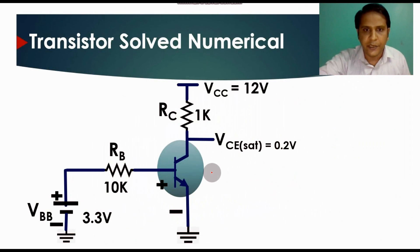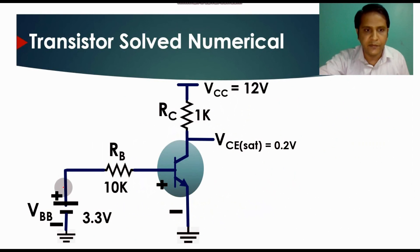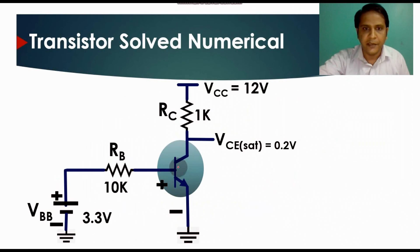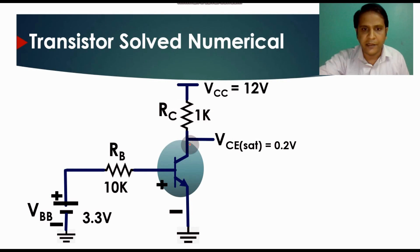Here we have the numerical problem. We have a 3.3 volt base voltage connected to a base resistance of 10k, which is then connected to the base of the transistor. We have a 12 volt supply going to the collector resistance RC which is 1k, connected to the collector terminal of the transistor.